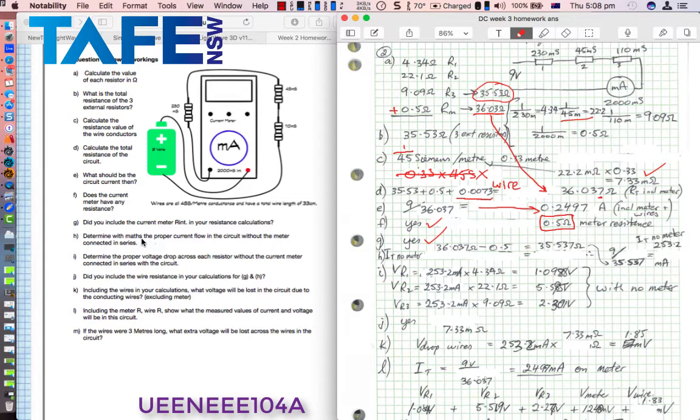H, determine with maths the proper current flow in the circuit without the meter connected in series. So we need to now get rid of that 0.5. Here it is, I'll put a box around it. 36.037 ohms minus 0.5, giving us 35.537 ohms. Divide that into our 9 volt supply, and that will give us the current without the meter, 253.2 milliamps. I'll put a big loop around that.